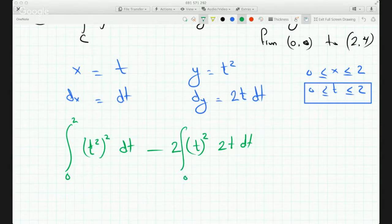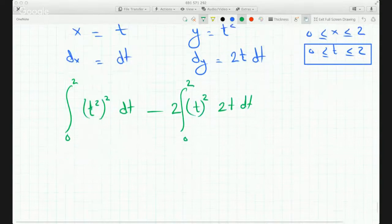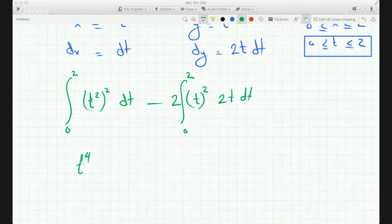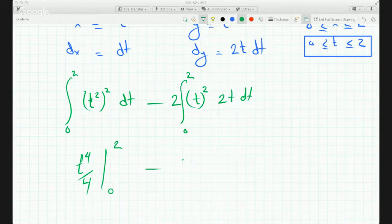And I can split this integral up into two separate integrals, and this is a straightforward integral. So t to the 4 over 4 from 0 to 2, minus 4.